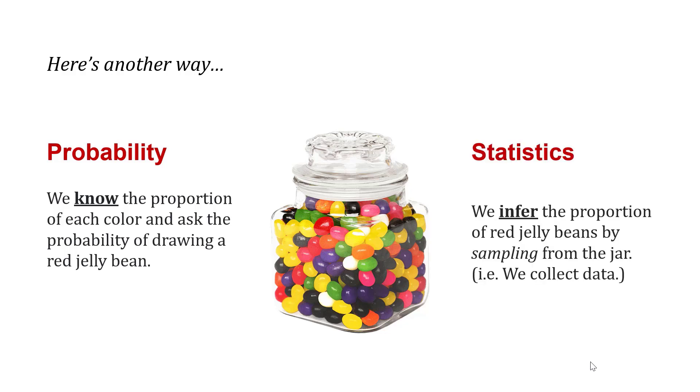With statistics, we might use inferential statistics, which we'll talk about later, to infer the proportion of red jelly beans by sampling from the jar. We collect data because we don't initially know what the proportion of jelly beans are. So with probability, we know the proportion and ask about probability. With statistics, we infer the proportion by sampling from the jar, by collecting data.